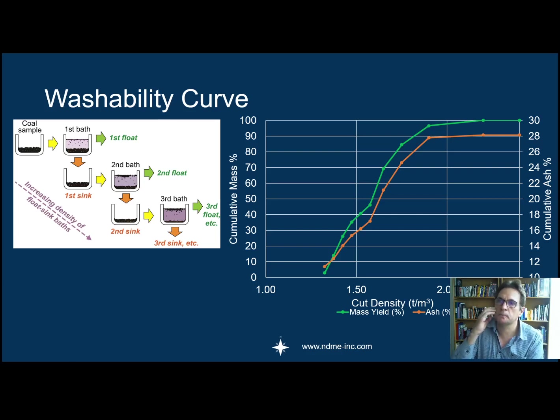Then what you do is you slowly increase the density so that you float more and more material—your sinks remain. Each of these pieces of materials here, you can assess their properties. In coal they often look at ash and the CV, which is the calorific value, and then you basically generate a washability curve.